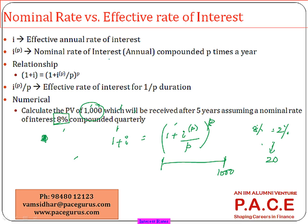Take P as the number of quarters, which is 20 quarters, and find out the present value using the discounting mechanism: thousand divided by (1 + 2%), since two percent is the effective quarterly rate.